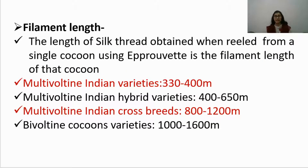The filament length is the length of silk thread obtained when reeled from a single cocoon using an eprivate, which is a single cocoon reeling machine. Multivoltine Indian varieties have a filament length of 330 to 400 meters, multivoltine Indian hybrid varieties 400 to 650 meters, multivoltine Indian cross breeds 800 to 1,200 meters, and bivoltine cocoon varieties have an excellent length of 1,000 to 1,600 meters.